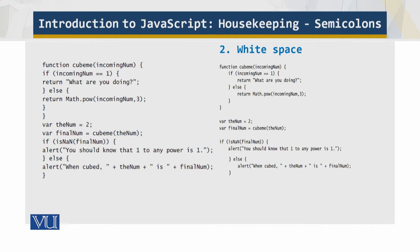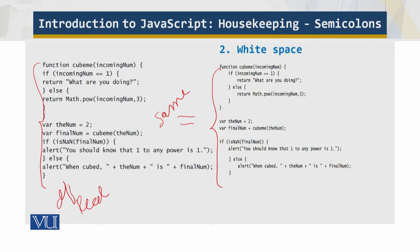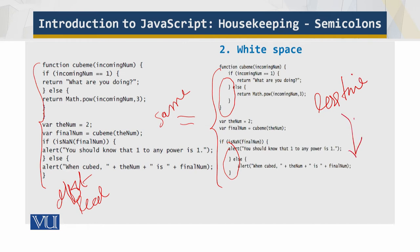Now we look at the importance of white space. The two code samples shown here are both identical, but one is very difficult to read. When you add proper spacing, it makes the code readable. After a couple of weeks, months, or years, code becomes very difficult to understand if it's not properly spaced. Writing code takes less time, but you might be using it for years, so you need to add white space.